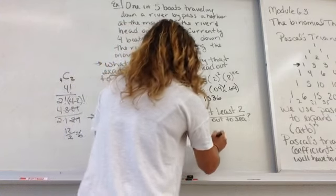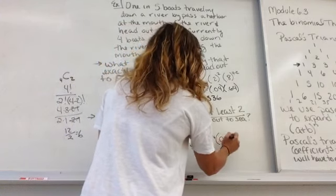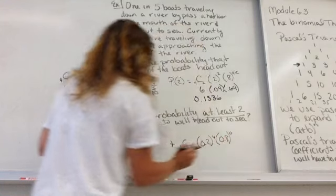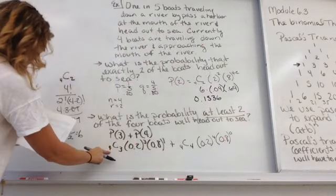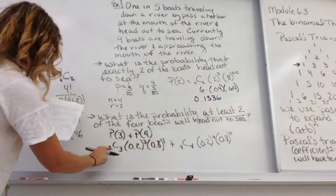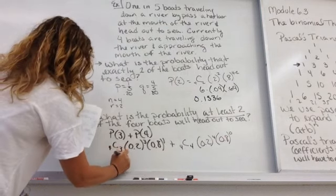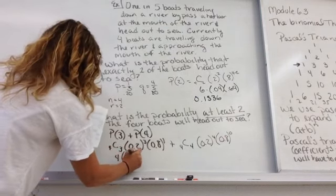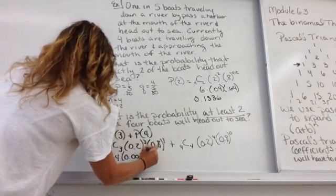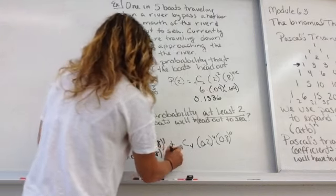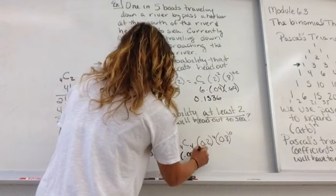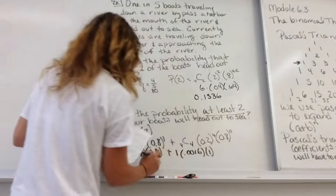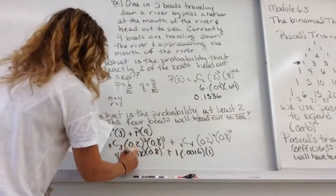Four things four ways. Probability of success at four times. And the probability of failure at zero. So, doing our factorials, which we can talk more about, this gives us four times 0.008 times 0.8 plus one times 0.0016 times 1. When you multiply these out, we get 0.0256 plus 0.0016 for a grand total of 0.0272.